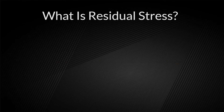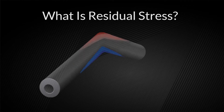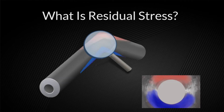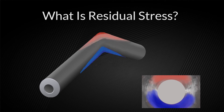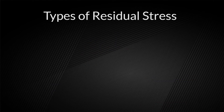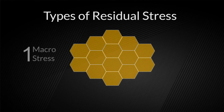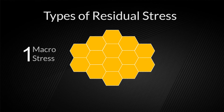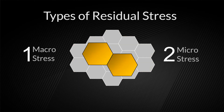Residual stress is the internal stress distribution locked inside an object after all external loading forces have been removed. These stresses are the result of the material obtaining equilibrium after it has undergone plastic deformation. There are three types of residual stress. Type 1, macro, is the average residual stress over a group of grains in the material. Type 2, micro,